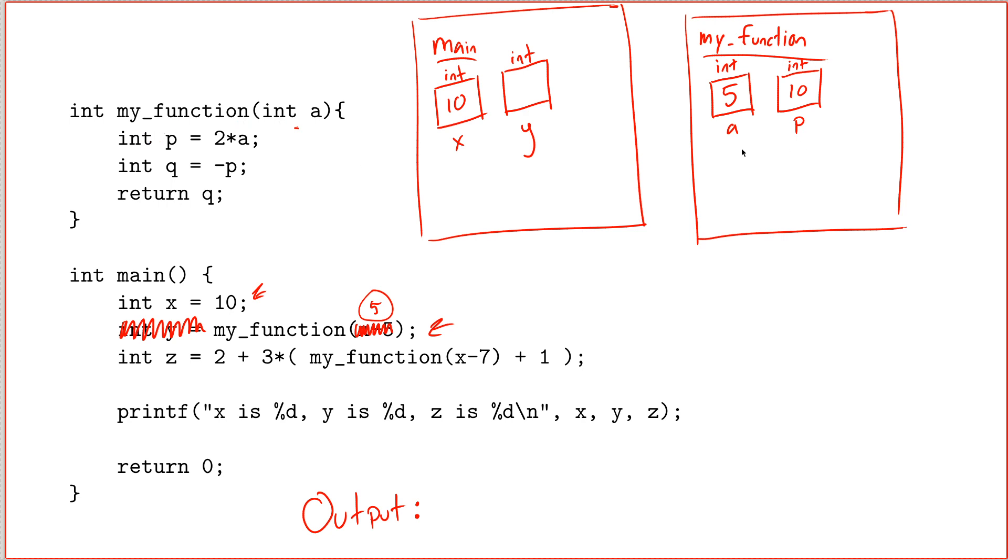And then, let's see, the next line. Int q. So I make a new box called q. I don't think I'm going to go through this in the greatest detail. Int q equals negative p. Int q equals negative 10. So now we reach this line. Return q.